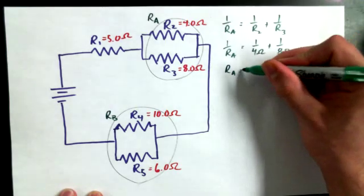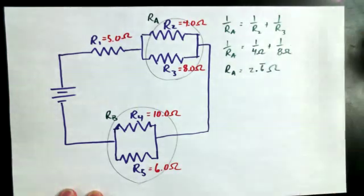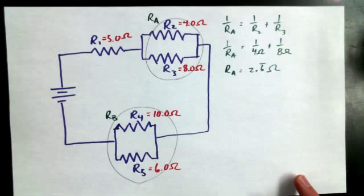2.6 repeated? Yeah, 2.6 repeated ohms. So that's 1 over 4 plus 1 over 8 and then the answer to that flipped, inverted.